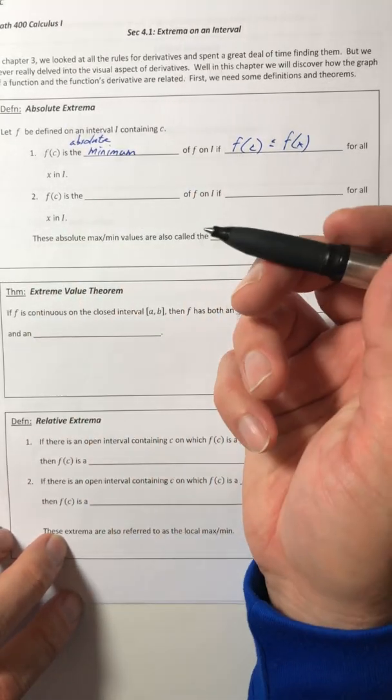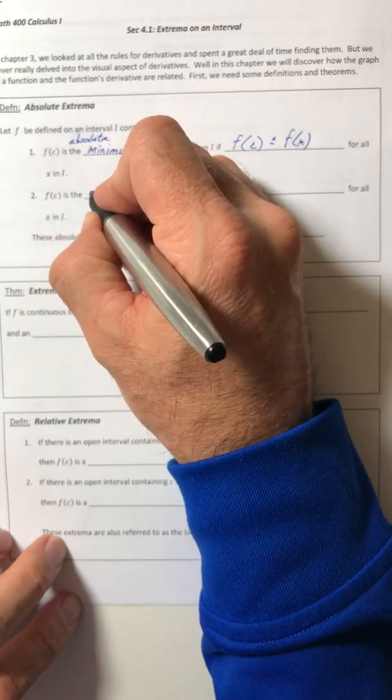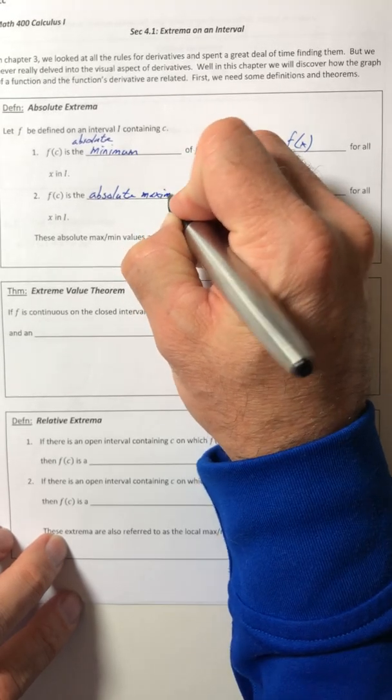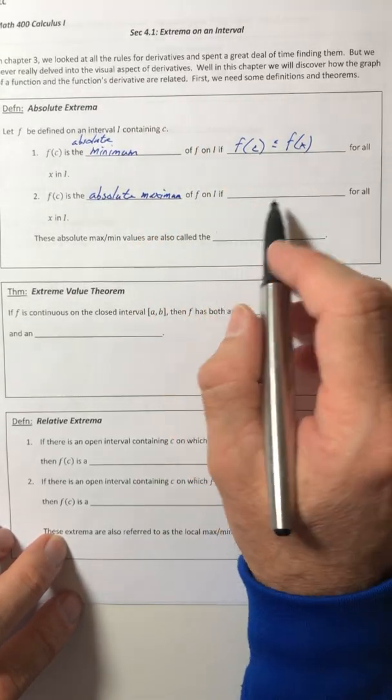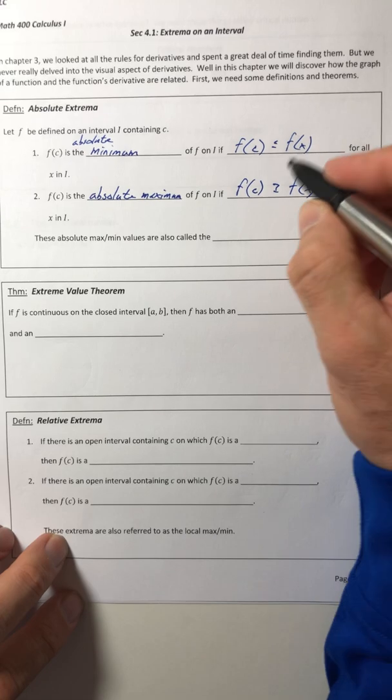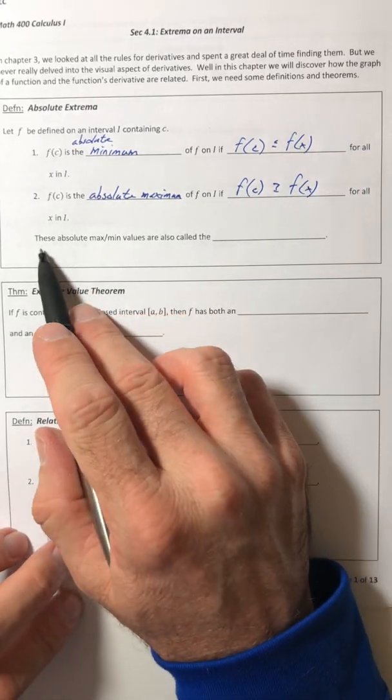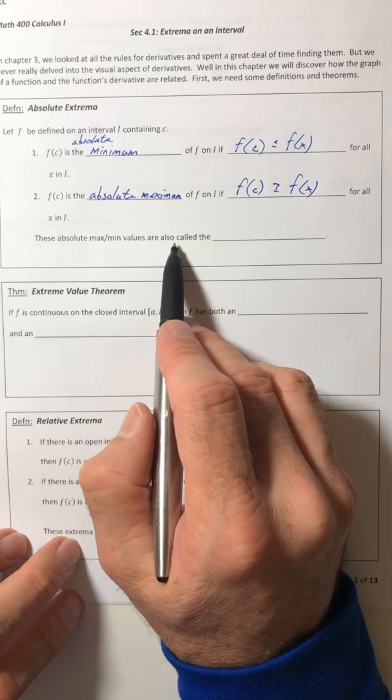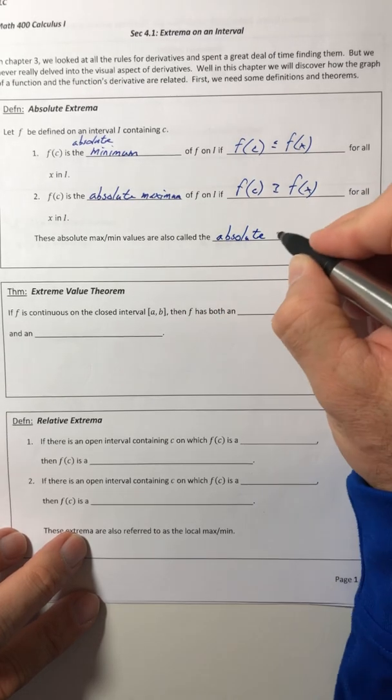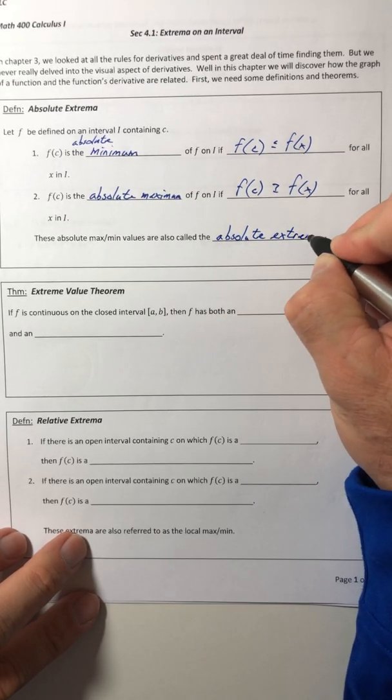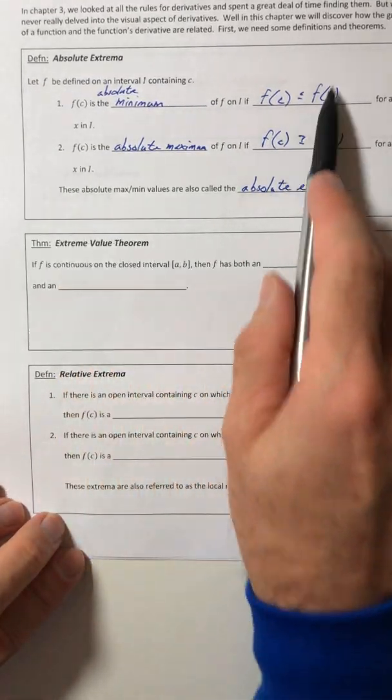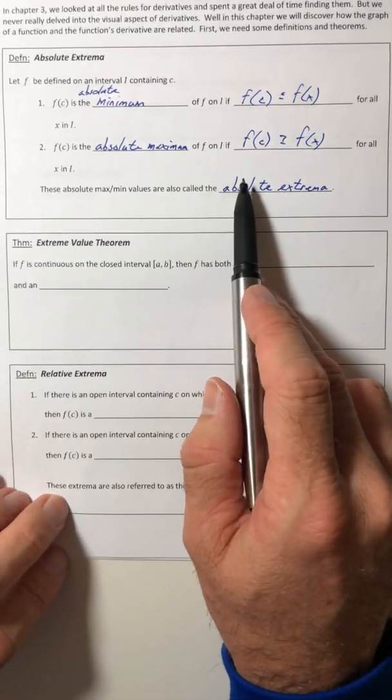So we can take its opposite. F of C is the absolute max of F on I if that function value is the largest, so it's greater than or equal to F of X for all X in I. So these absolute max and min values are also called the absolute extrema. We'll get into it later, how to actually find those, but that's the vocabulary for you.